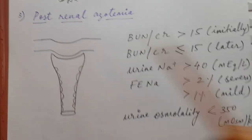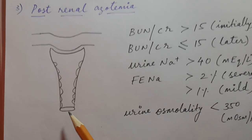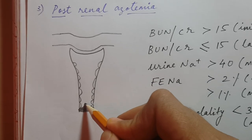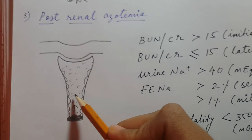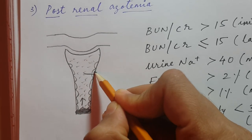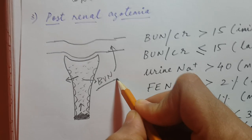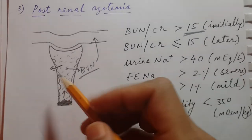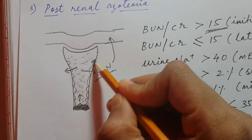Post-renal azotemia occurs when there is some kind of obstruction, causing backup of urine that keeps accumulating in the tubules. Initially, the pressure build-up causes more BUN to be reabsorbed back into the blood, so the BUN to creatinine ratio is greater than 15 — that is the initial manifestation. However, if the obstruction remains for a longer time, the increasing pressure eventually starts damaging the tubular epithelium.